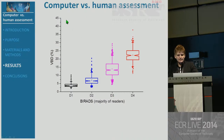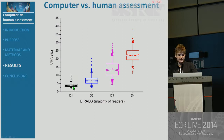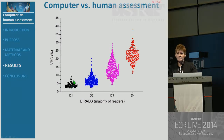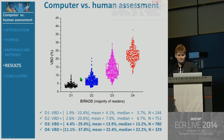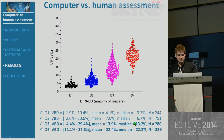Let's look at computer versus human assessment: the distributions of volumetric breast density versus the four BI-RADS categories. This is the majority of readers, and you have the description of the distribution. But if you add the data, you see they are sparser, definitely — they are not Gaussian, and you have overlapping of data between two adjacent categories.